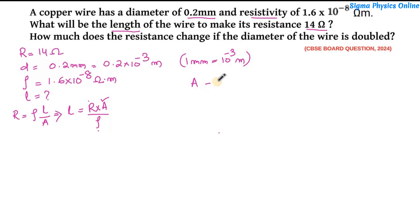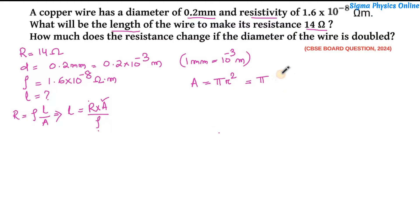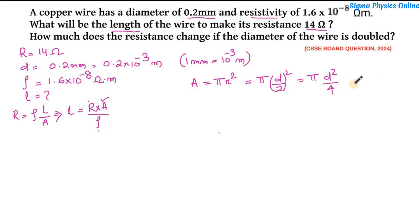Now, the area of the wire is given by πr². Here we don't have the radius; rather we are given the diameter. We know that the radius is half of the diameter, so it will be π(d/2)², which is πd²/4.